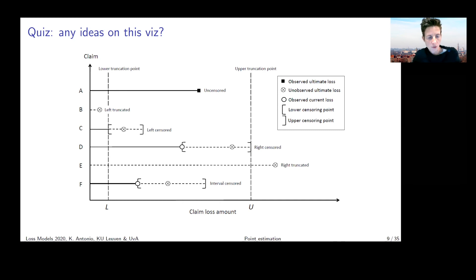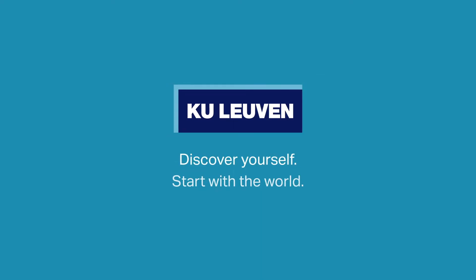If you look at event A, that is an event which is uncensored, not subject to left or right truncation. You see here the full loss or the full event you're interested in. Why is that? Because my loss goes above the lower truncation point, stays below the upper truncation point, and there is no censoring going on. That would be an example of a complete observation.